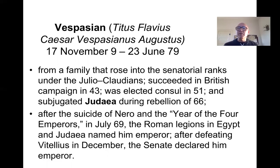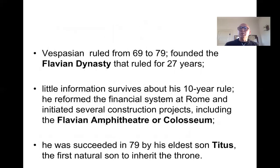He had quite a few numerous military campaigns where he succeeded — certainly in Britain, but primarily in Judea, that is modern-day Palestine, in what we call the Holy Land today. It was there where he quelled a rebellion in 66, becoming well known as a general to much acclaim back home in Rome. After the year of Nero's suicide and the year of the four emperors — in 68, 69 — he was named emperor, defeating Vitellius in December of that year, and then the Senate declared him emperor. He ruled for 27 years, with his family ruling for 27 years total, making them among the longest-serving dynasties in Roman imperial history.